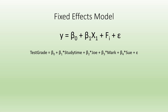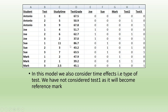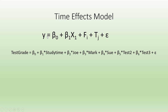The intelligence of Antonio will be captured by the intercept beta 0. Now we are also including the test — the time period impact. Wherever test 2 is present it will be indicated by 1, and when test 3 is there, it will be indicated by 1. Test 1 will be captured by the intercept. So the time effect model is: y equals beta 0 plus beta 1 x1 plus phi_i plus tau_j plus epsilon.